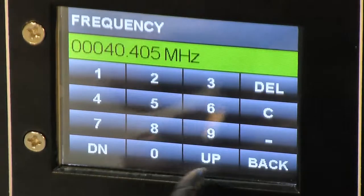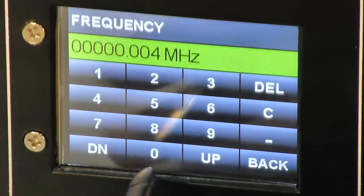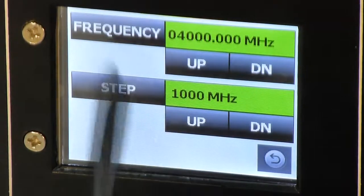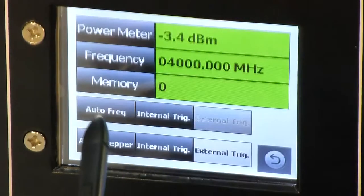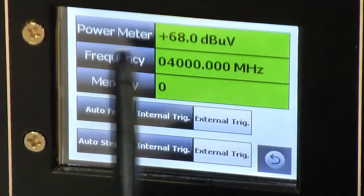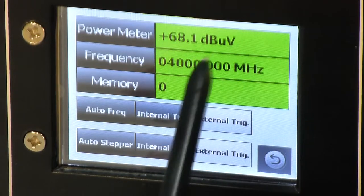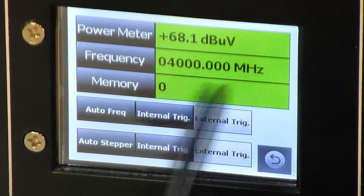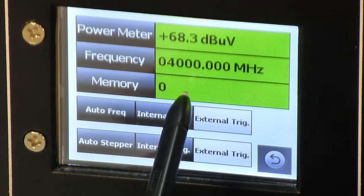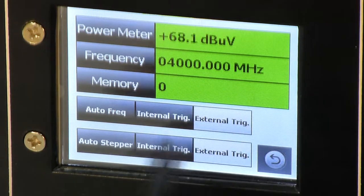Let's set the frequency to 4000 MHz. Now frequency is 4000 MHz. On power meter option, you will see current power level and current frequency. Current power is shown here and the current frequency is 4000 MHz. Memory location is 0, which shows no data is stored in internal memory of this instrument.